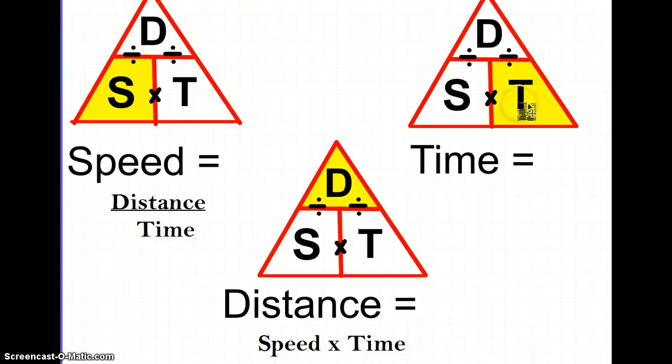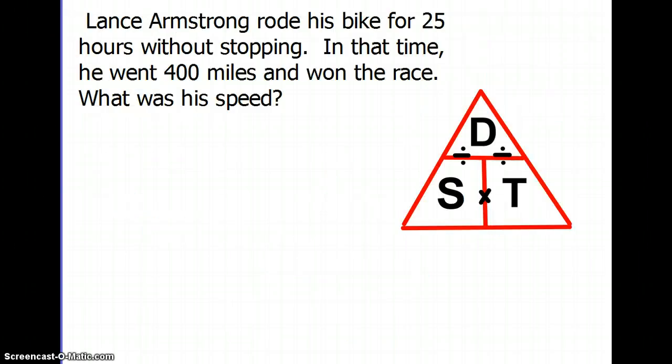If you want to find the time, cover up the T. You have a D over S, so the formula for time is distance divided by speed. So now Mrs. Brown is going to take you through a sample problem where you are calculating one of those three variables.